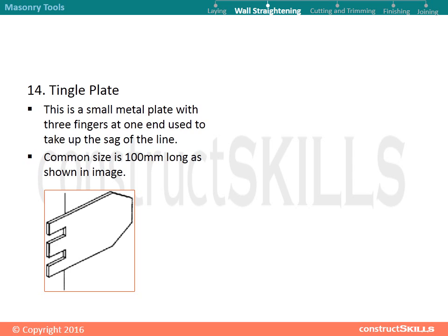Wall straightening tools: tingle plate. The tingle plate is a small metal plate with three fingers at one end, used to take up the sag of the line. The common size is 100 mm long, as shown in the image.